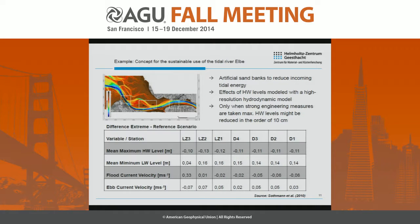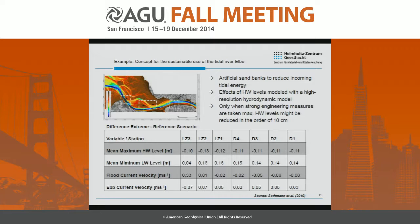We investigated whether or not this works together with the Port Authority in an EU-funded project. We set up a high-resolution numerical model for the estuary and introduced some artificial sandbanks according to the Port Authority's suggestions. To summarize, we found that only when very strong engineering measures are taken could we reduce the maximum high water levels in Hamburg by about 10 centimeters, which is not really a strong effect.